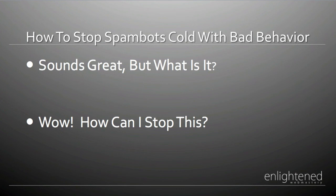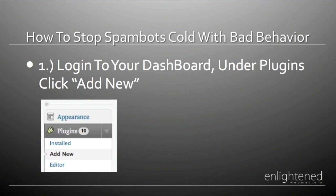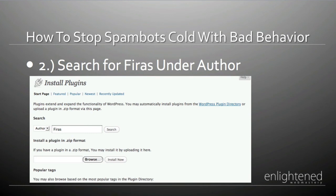Assuming that you've read the article, watched the video, and have everything set up, let's proceed with installing this and getting your site protected right away. The first thing I need you to do is log into your dashboard. Scroll down a little bit and on the left side you're going to see an option titled Plugins — click Add New. Once you're on that page, change the type from term to author, then type in Firas, F-I-R-A-S, and click the search button.